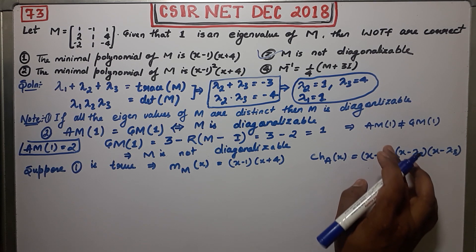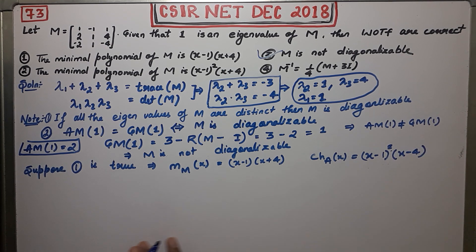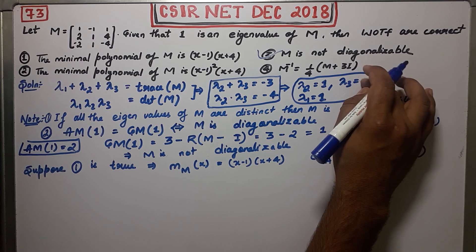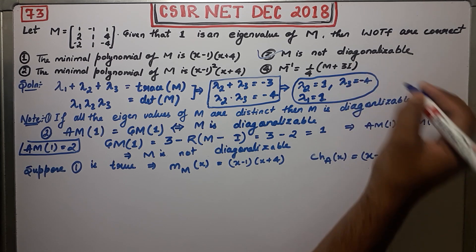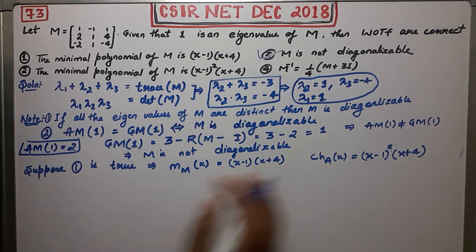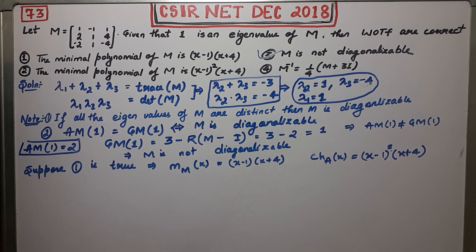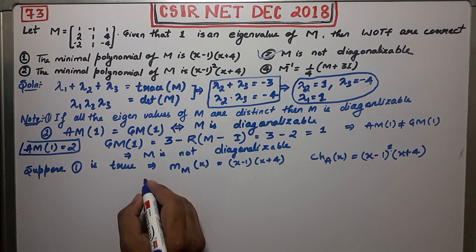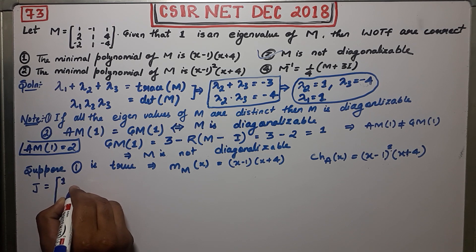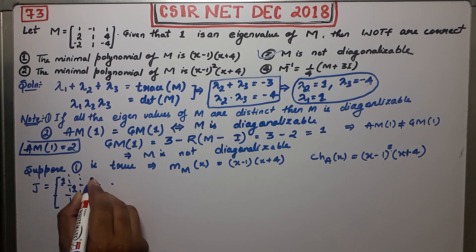Correcting: the third eigenvalue is minus 4, so lambda 3 equals minus 4, giving the factor (x plus 4). The characteristic polynomial is (x minus 1) squared times (x plus 4). If the minimal polynomial were (x minus 1)(x plus 4), you could write the Jordan canonical form as the diagonal matrix with entries 1, 1, minus 4 — which is diagonal.